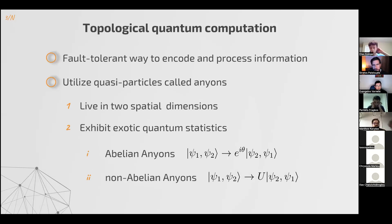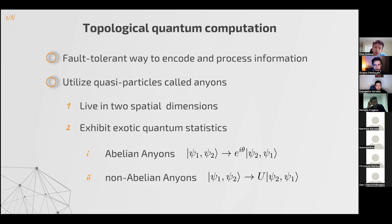Let's talk about topological quantum computation. This is one of the many different architectures for a quantum computer, which has the advantage of allowing us to encode and process information in a fault-tolerant way by design. That way, we don't have to worry much about errors and it's easier, in principle, to scale up the system. This is accomplished using certain quasiparticles called anyons, which live in two spatial dimensions and exhibit quantum statistics that is neither bosonic nor fermionic.